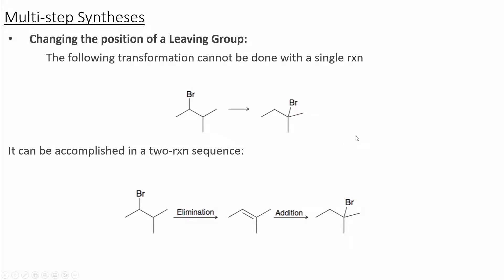In some cases, we might need to use multiple steps to obtain our product. Here, we have a bromine attached to the secondary carbon, and in the product it moves over to the tertiary carbon. We have not learned a single reagent that can perform this task. However, we've learned a two-step sequence: first, use an elimination reaction to remove the bromine and form a double bond, then re-add the bromine using hydrohalogenation to get the bromine at the correct position.